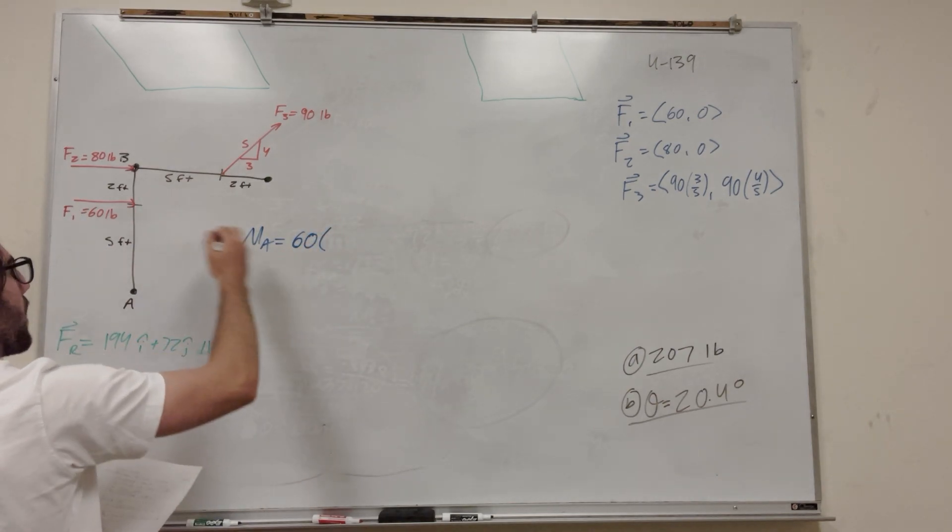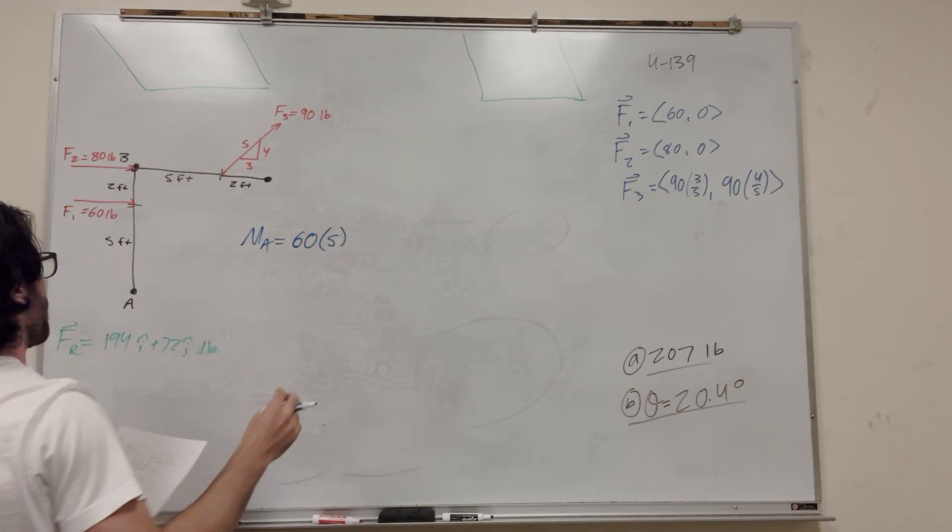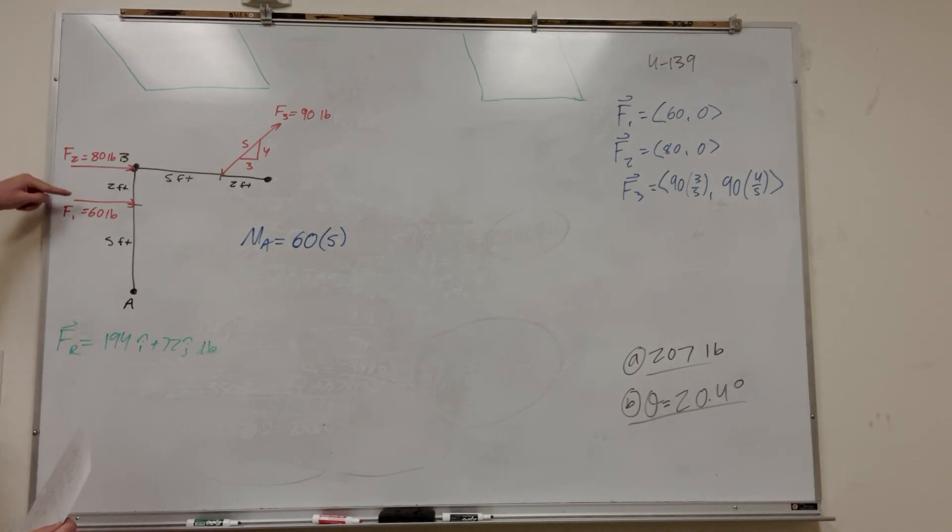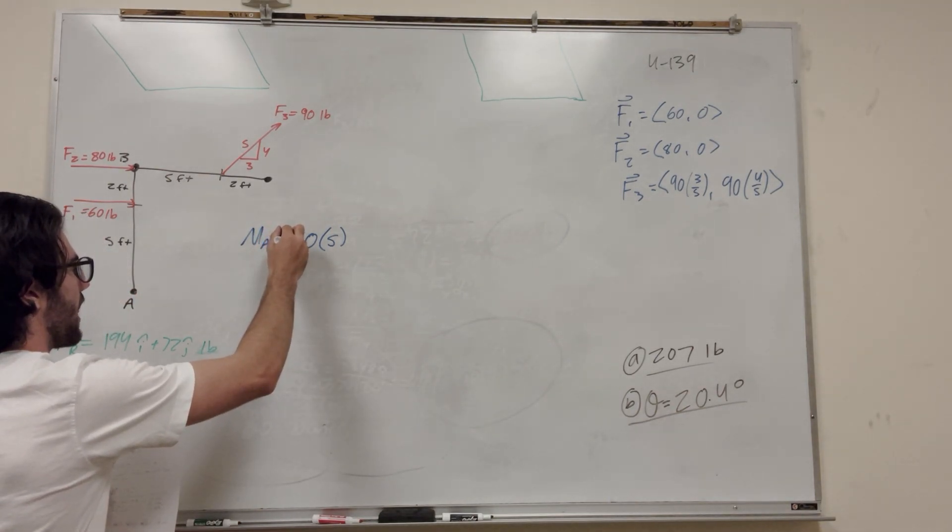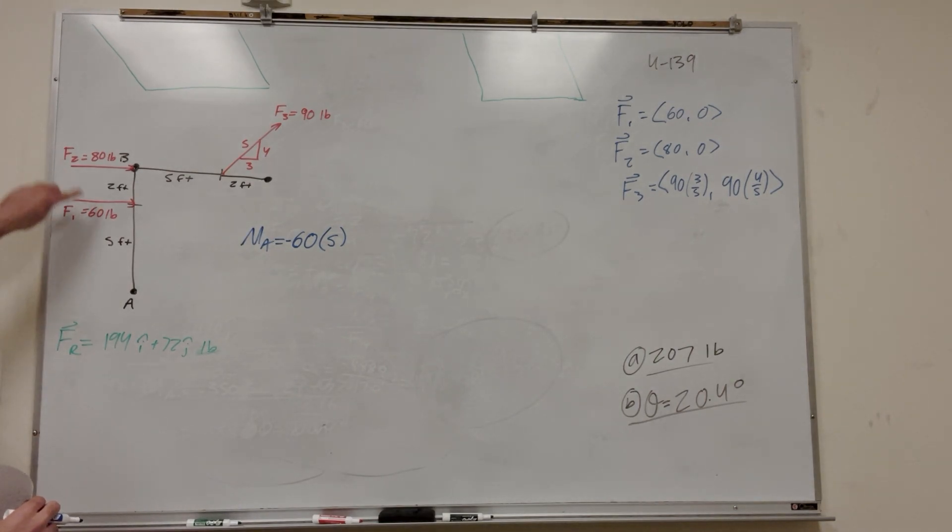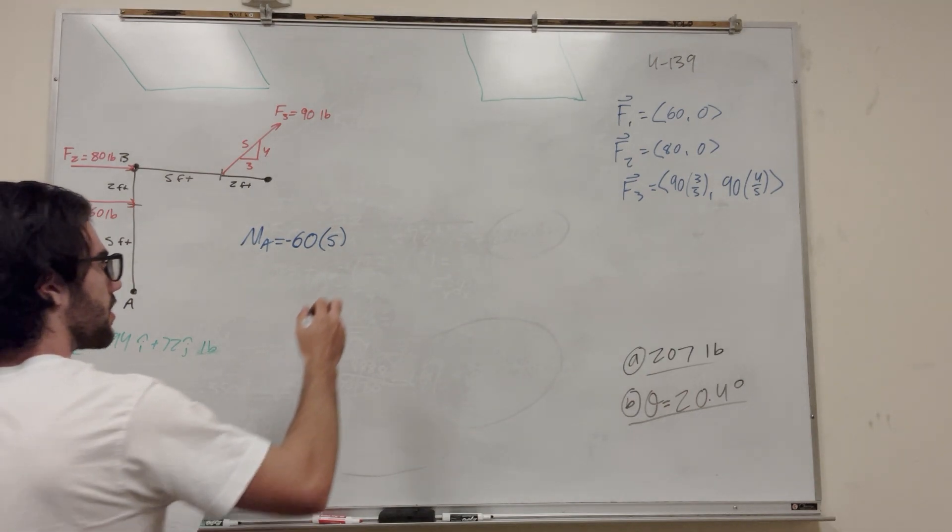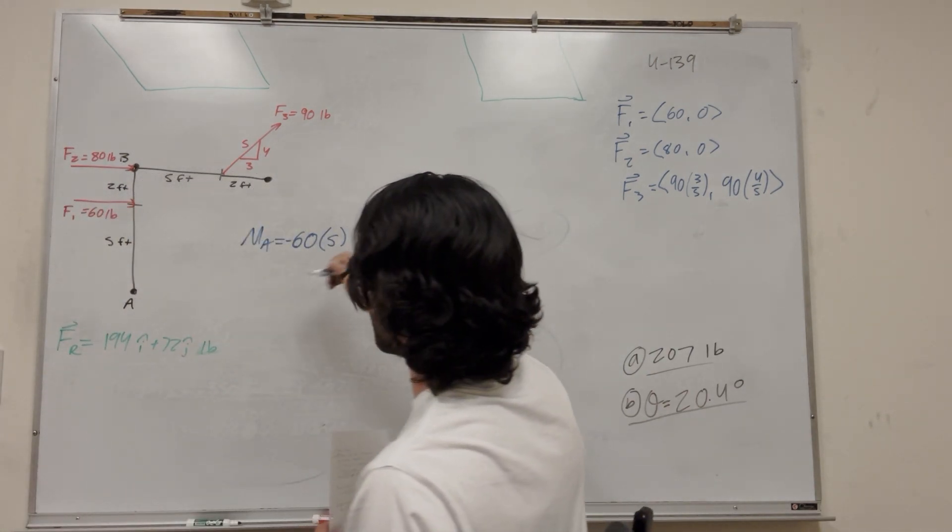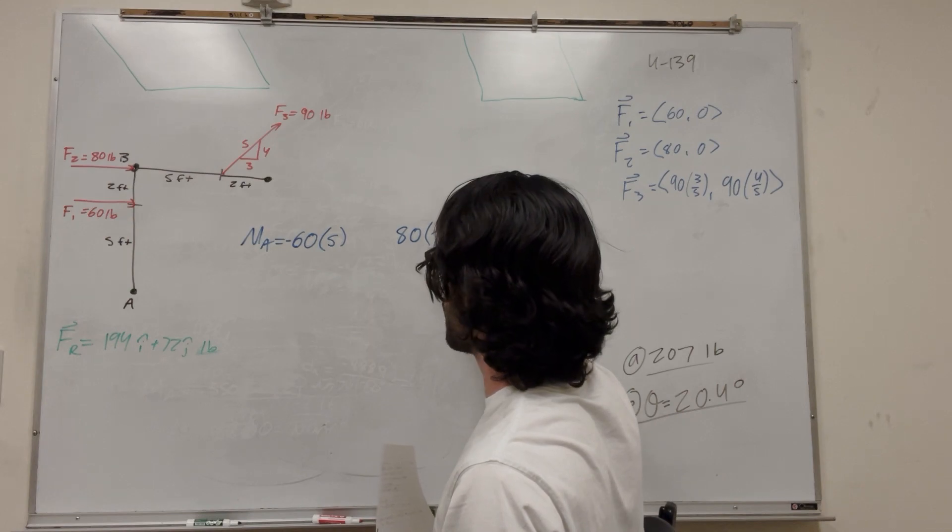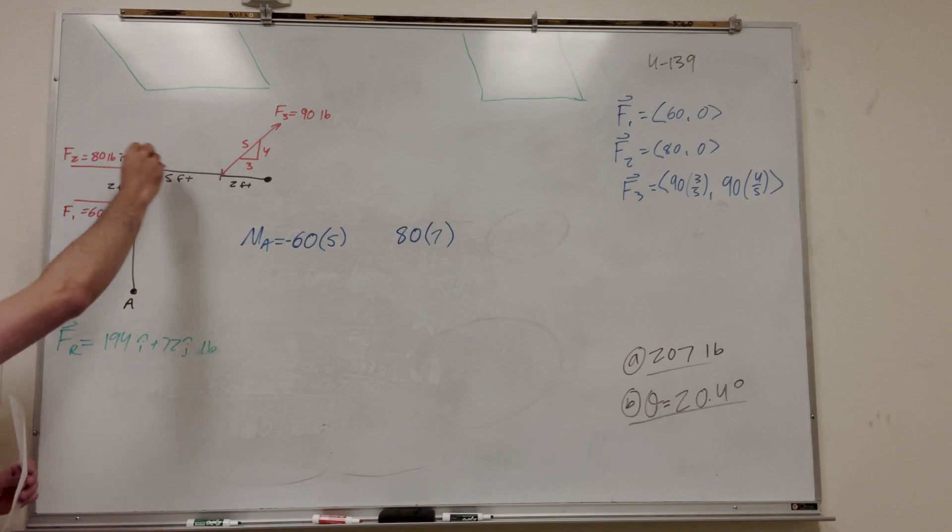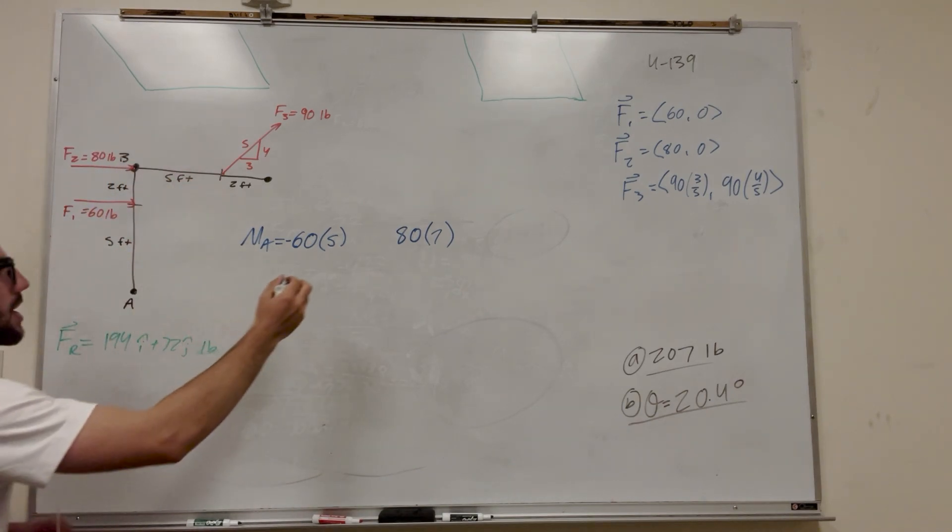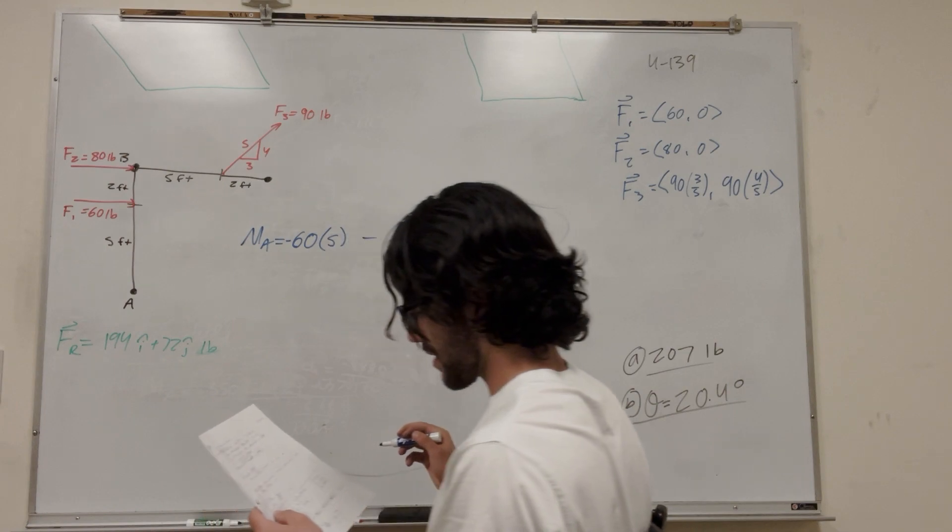And then distance in the y direction is 5 feet. But then we have to consider which way is this going to rotate. So it's pushing this way. And that's going to make us want to rotate clockwise. So if we're rotating clockwise, we have to subtract it. So this is actually going to be a negative. So then let's look at force 2. So force 2 is 80. And then its distance in the y is 7 feet, 2 plus 5. But then this one is also going to be negative. This force is pushing this way, which is going to make us want to go clockwise around A, which means we're going to subtract.